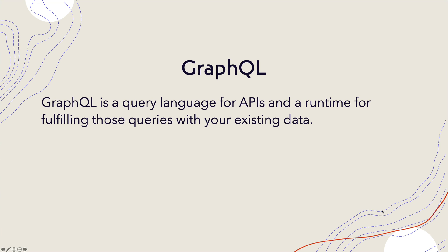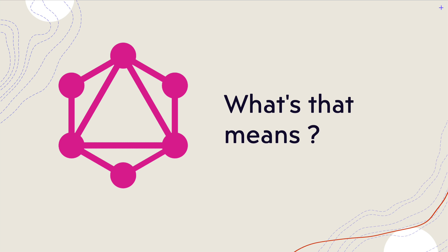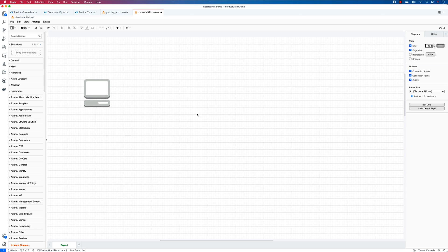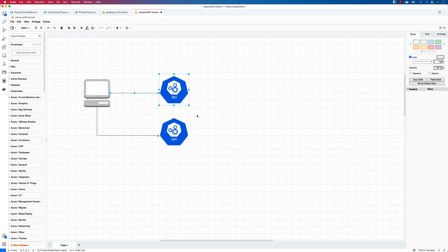GraphQL is a query language for APIs and a runtime for fulfilling those queries within your existing data. To understand this, we should go back and look at the classical API first. Let's take an example of a normal client — a web page, browser, or mobile application — that used to interact with a REST API using an HTTP request.